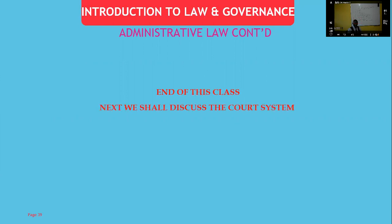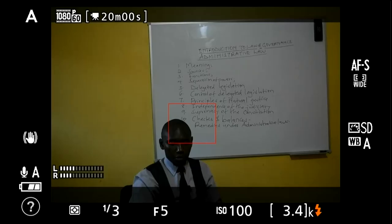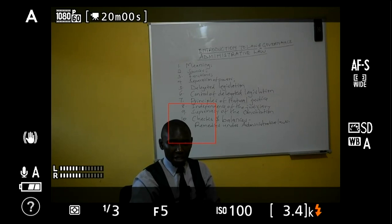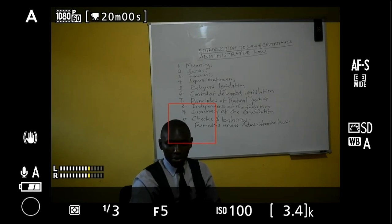We have now come to the end of the class. We have looked through administrative law: its sources, functions, separation of powers, delegated legislation and its control, principles of natural justice, independence of the judiciary, supremacy of the constitution, checks and balances, and remedies under administrative law. In the next class we will look at the court system in Kenya and their hierarchy. I have been your lecturer Derek Moma — see you in the next class.